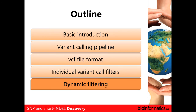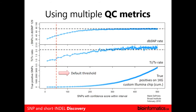There are a lot of different filters you can use and it's all daunting — and it is that daunting in real life too. One of the answers to coping with this is dynamic filtering. The Broad, for example, liked looking at three things simultaneously: as they adjusted variant calling parameters, they would look at their dbSNP rate, the transition-to-transversion ratio, and the overlap with a SNP chip — in this case a 1000 Genomes chip — to figure out at what point to define their cutoffs.